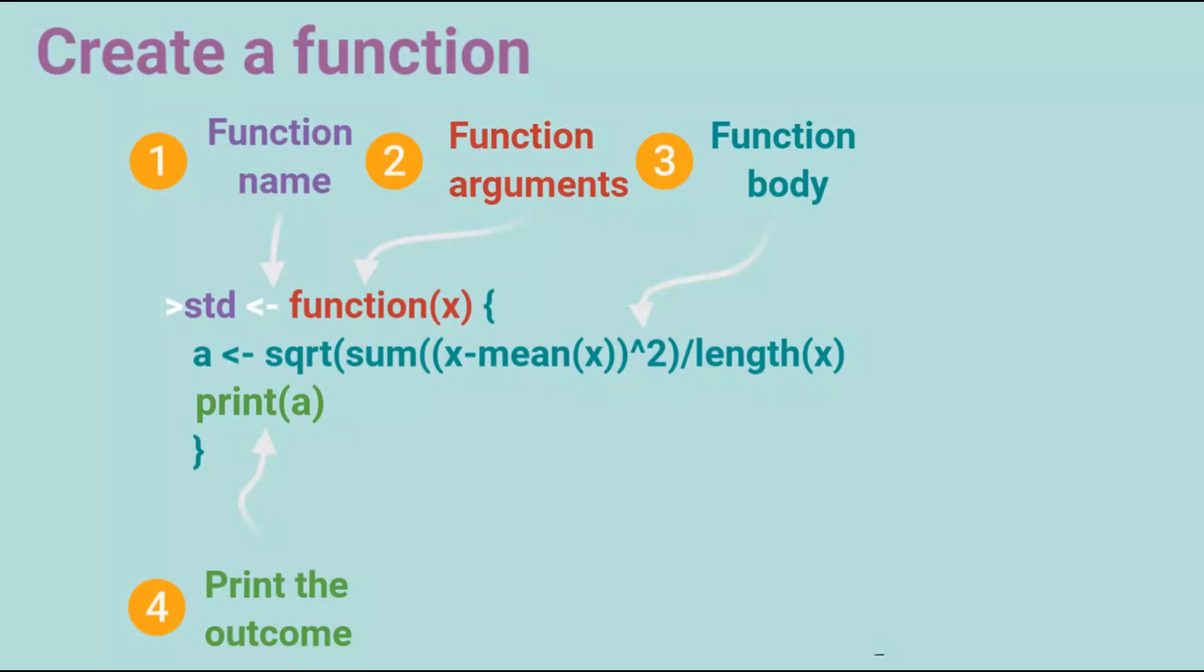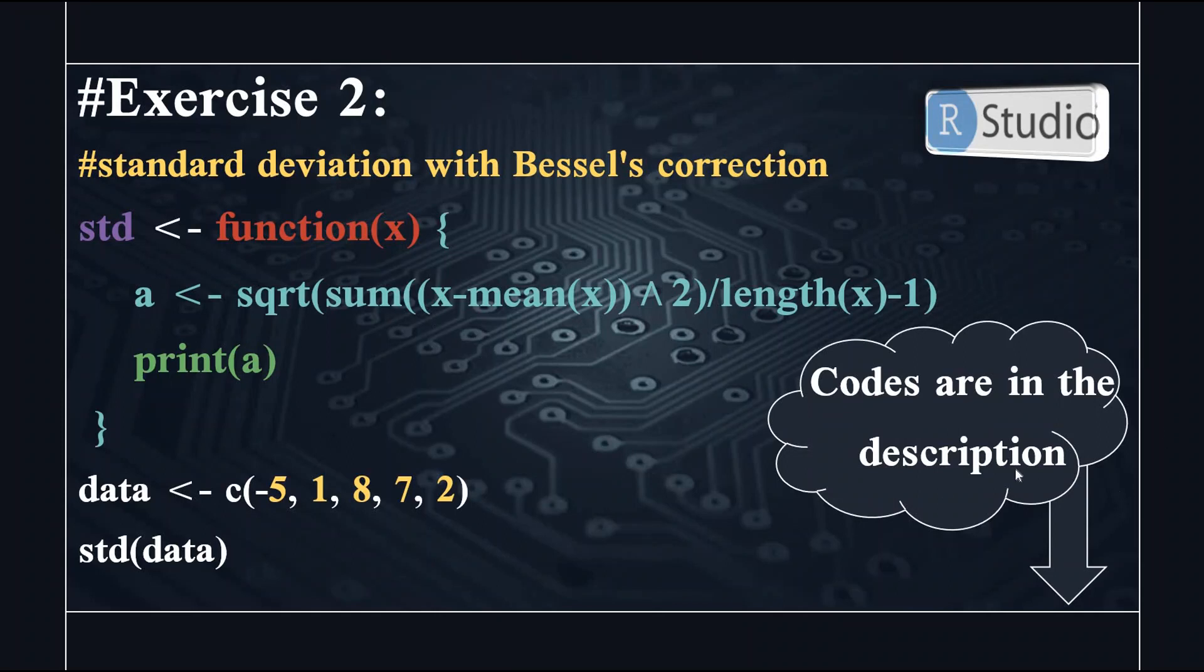So in this example, we are going to calculate the standard deviation. So we will have the function name here, the function argument and the function body here. And also we can print the outcome. So here in exercise two, again, the codes are in the description. We are going to create our function. Then we are going to assign a vector to data. And now we recall the function, our function called STD standard deviation, and calculate the standard deviation of these data.